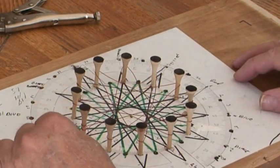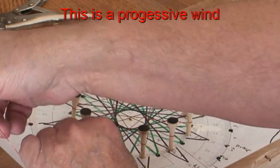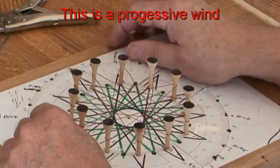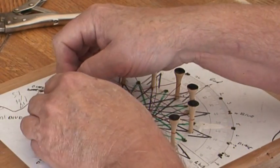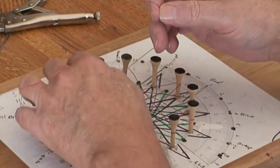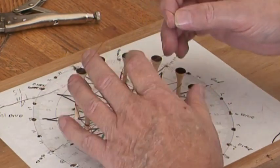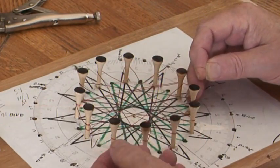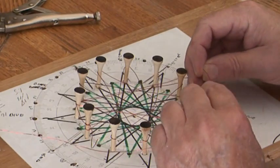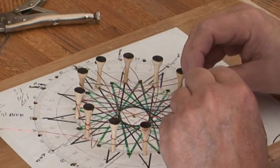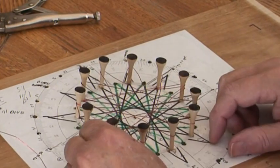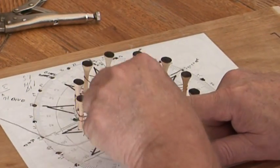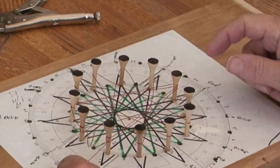Now we can continue with that pattern, or we can do something a little bit different. We can start doing a 360. We'll move over to this peg and now we'll go 1, 2, 3, 4, 5. And we'll go 1, 2, 3, 4, 5, and so on.